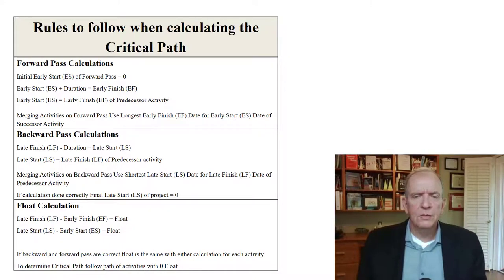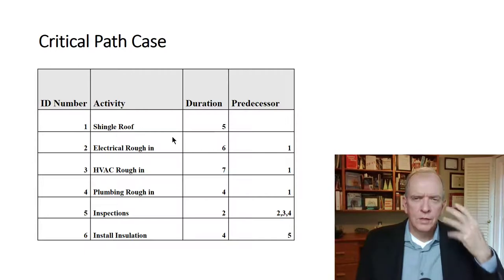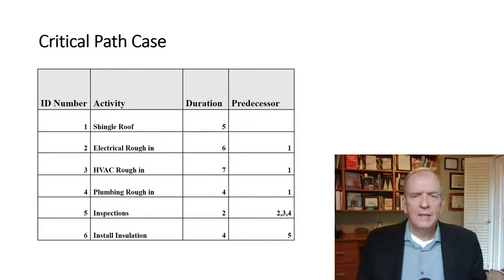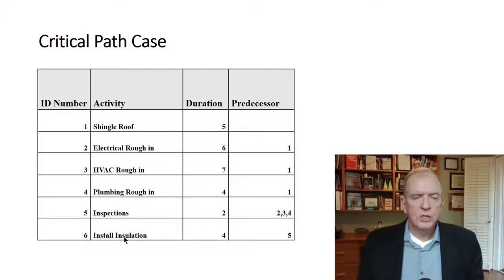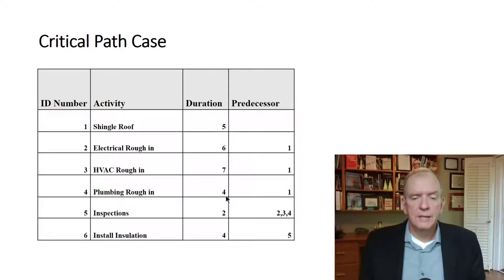I'm going to do two cases today. One fairly quick one just to get the thinking going, and another to walk you step by step through it. Let's say we have a few activities: putting shingles on a roof, doing building systems rough-ins, inspections, and installing insulation. They're numbered, because CPM really works like a database program — you have different tables communicating to each other, so we reference everything with a numbering system. We also have timelines — durations in days: five days, six days, seven days, four days, two days, and so on.